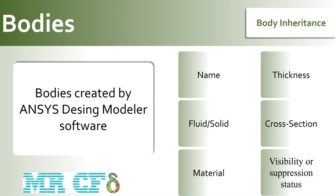New bodies are usually added to the model as a separate part, meaning they are not grouped in a multi-body part. However, if a new body is derived from another body in the model and that source body belongs to a multi-body part, then the new body will automatically be grouped into the same part. If the source body doesn't belong to a multi-body part, then the new body is added to the model as a separate part.